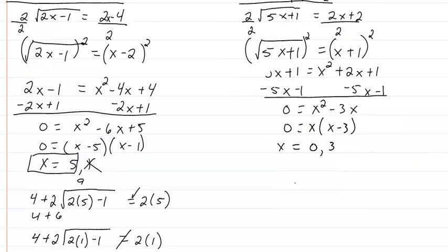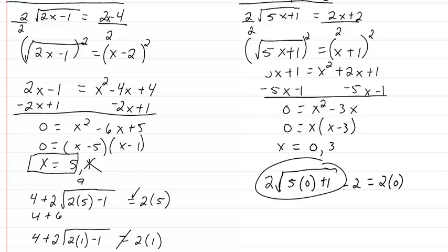So we put those back into the original equation. So we're going to have 2 times 5 times 0 plus 1 minus 2 equal to 2 times 0. Well, no matter what happens with this, when we subtract 2 we're not going to get 0. So 0 is not a solution.